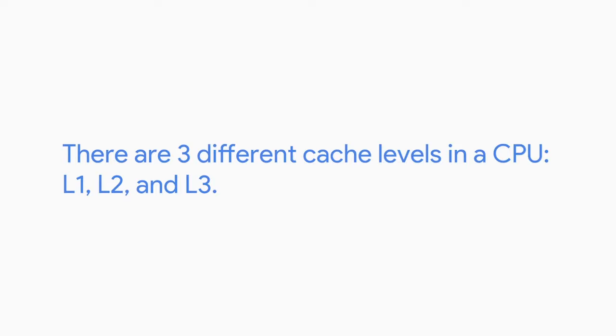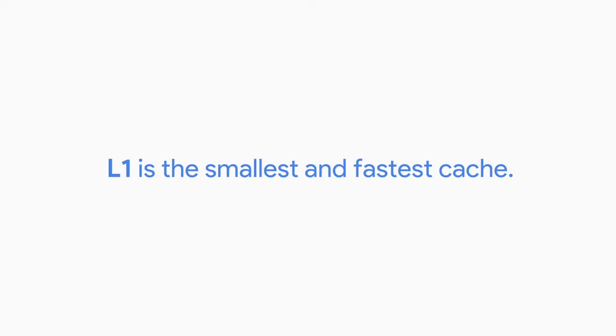RAM isn't the fastest way we can get more data to our CPU for processing. The CPU also uses something known as cache. Cache is smaller than RAM, but it lets us store data that we use often and lets us quickly reference it. Think of RAM like a refrigerator full of food — it's easy to get into, but it takes time to get something out. Cache is like the stuff we have in our pockets — it's used to store recently or frequently accessed data. There are three different cache levels in a CPU: L1, L2, and L3. L1 is the smallest and fastest cache.